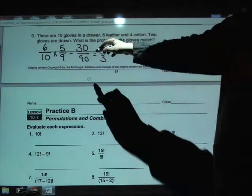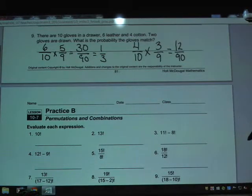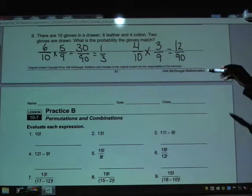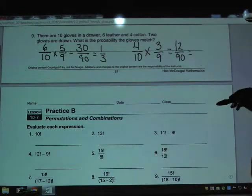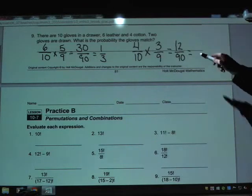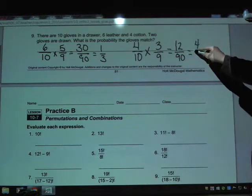As you can see, since these both worked out to be out of 90, we could have just added them together like that. But we can go ahead and reduce these down if we want. We can divide by 3, and that becomes 4 out of 30.